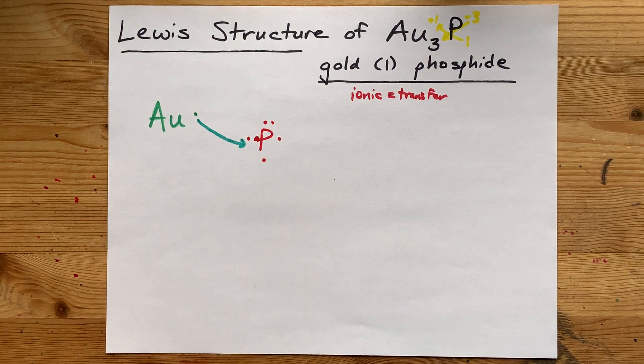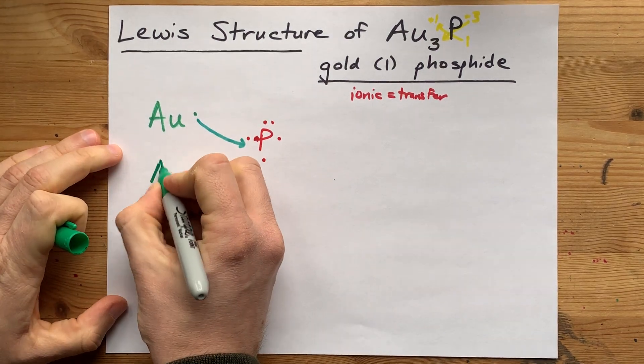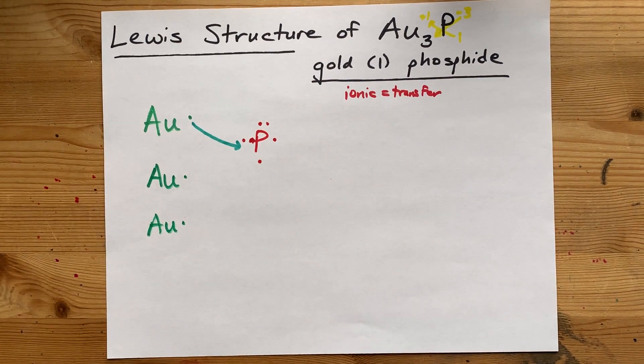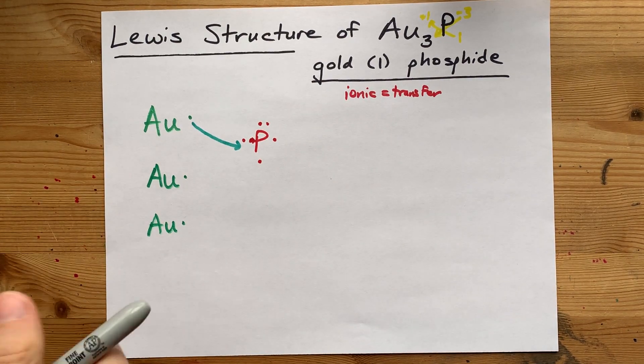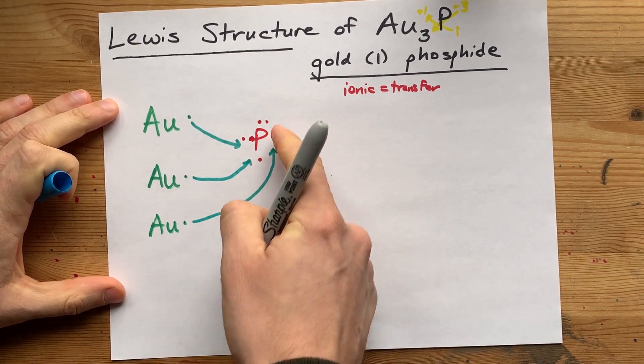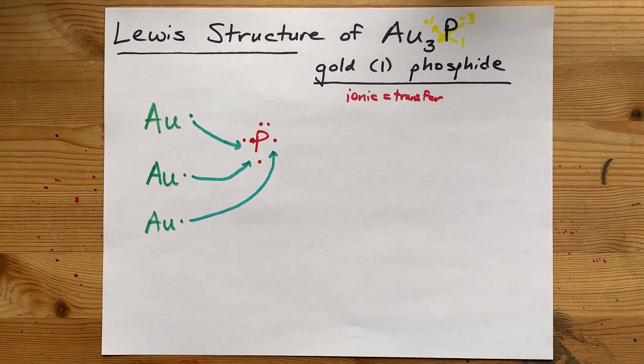So, where is phosphorus going to get 2 more? The answer is, 2 more gold atoms with their 1 valence electron each will donate their electrons to pair up with these unpaired electrons in the original phosphorus.